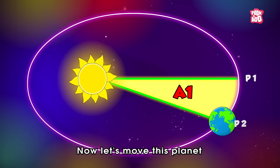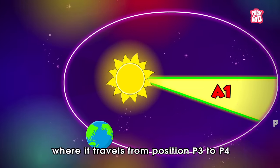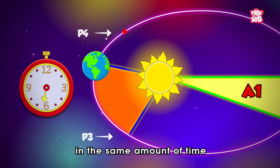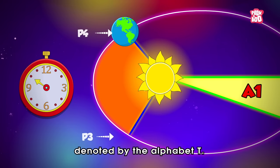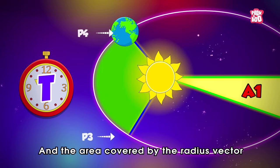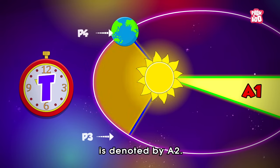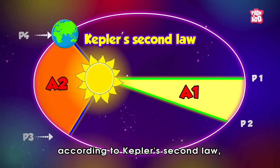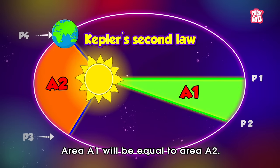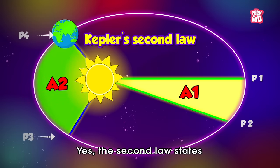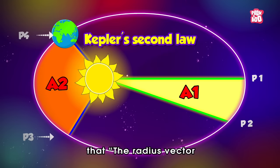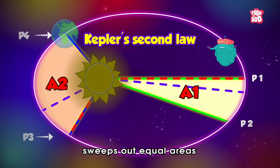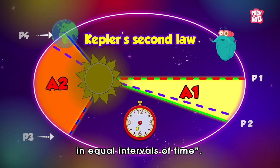Now let's move this planet to the opposite side, where it travels from position P3 to P4 in the same amount of time, denoted by the alphabet T. And the area covered by the radius vector is denoted by A2. According to Kepler's second law, area A1 will be equal to area A2. The second law states that the radius vector drawn from the sun to the planet sweeps out equal areas in equal intervals of time.